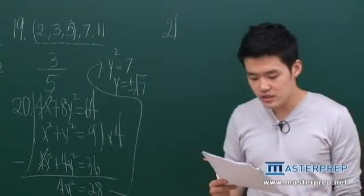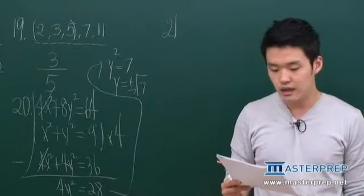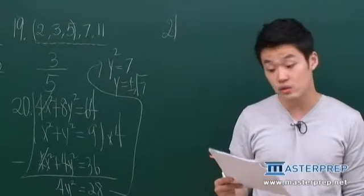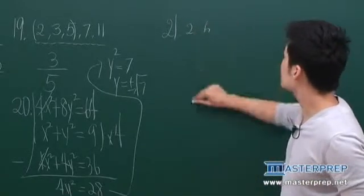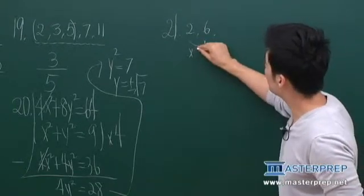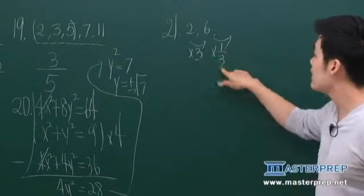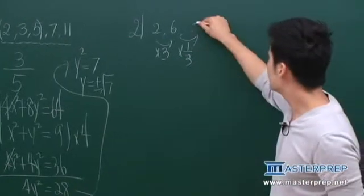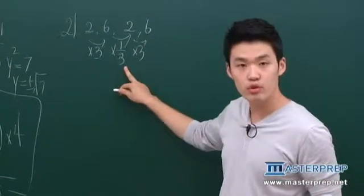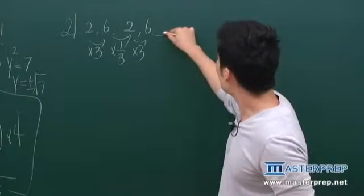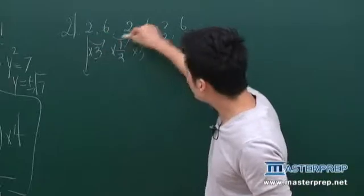Each term of a sequence after the first is inversely proportional to the term preceding it. If the first two terms are 2 and 6, what is the 12th term? We have 2 and 6. It was multiplied by 3, so we have to multiply by 1 over 3 because that was inversely proportional. So we have 2 and again 6 because it is again inversely proportional. So we have 2 and 6 going on.